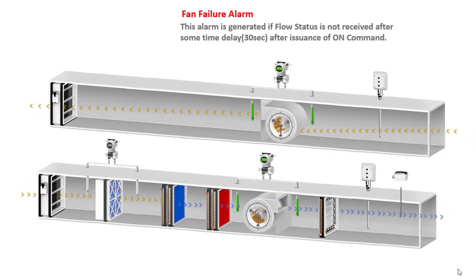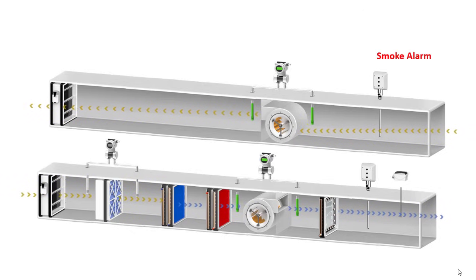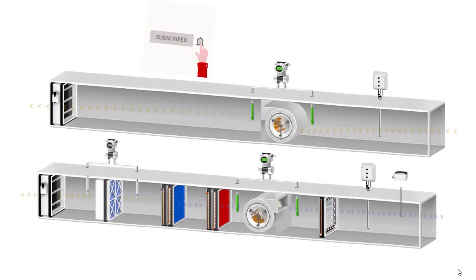If the motor is burned or a belt is cut, the DPS will not give a signal and a fan failure alarm is issued to avoid further damage. This alarm must be reset by the operator to ensure the issue is resolved in the field. Finally, we have a smoke alarm, provided by smoke detectors installed in both the supply air duct and the return air duct.